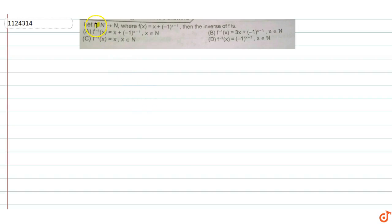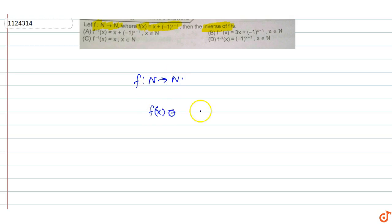In this question, let f be defined from N to N where f(x) is equal to x plus (-1) raised to power x minus 1. So inverse of function f(x) we need to find. The function f is defined from N to N (natural numbers), so f(x) equals x plus (-1) raised to power x minus 1.